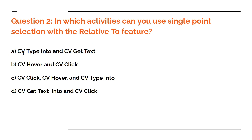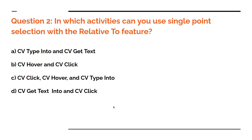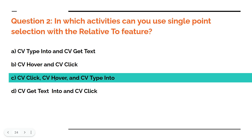So in which activities can you use single point selection? Here are the options: A) cv type into, cv get text, cv hover, cv click; B) cv click, cv hover, cv type into; or C) cv get text, or D) cv click. Now looking at these options, tell me what is your right answer — comment your answer. So let me reveal the answer: the answer is cv click, cv hover, and cv type into — these are all single point selection.